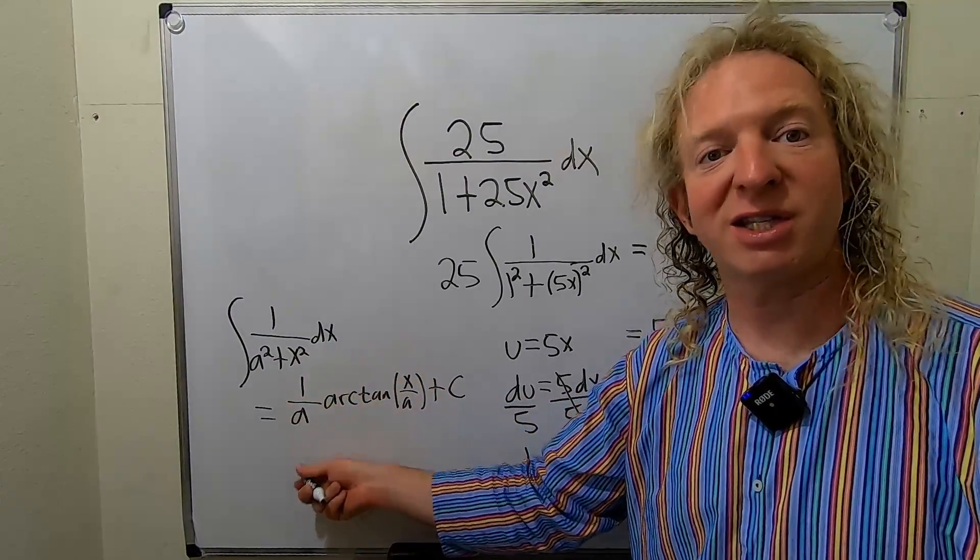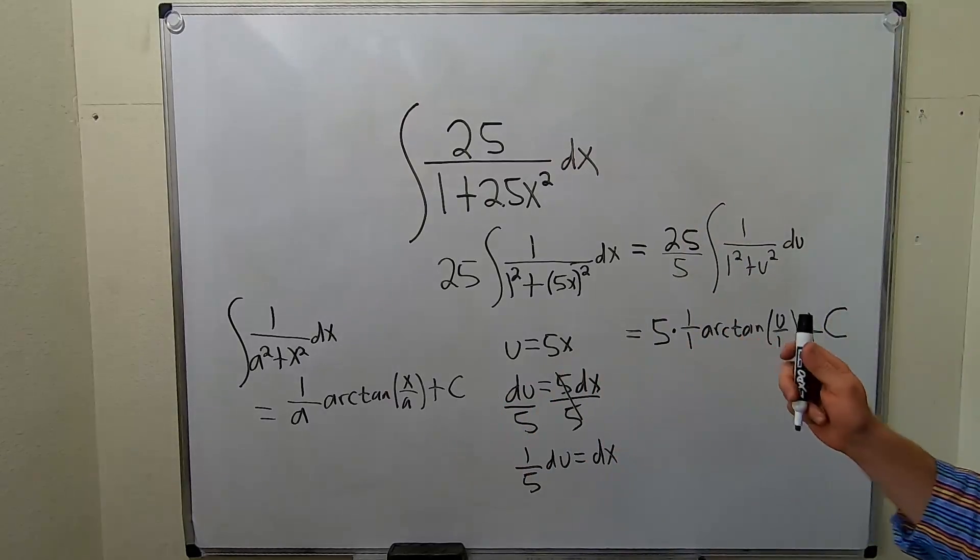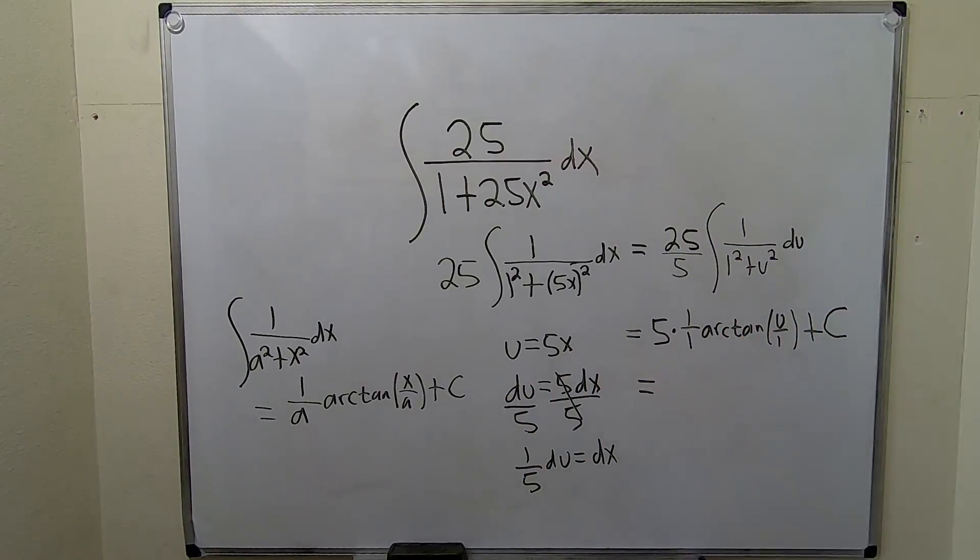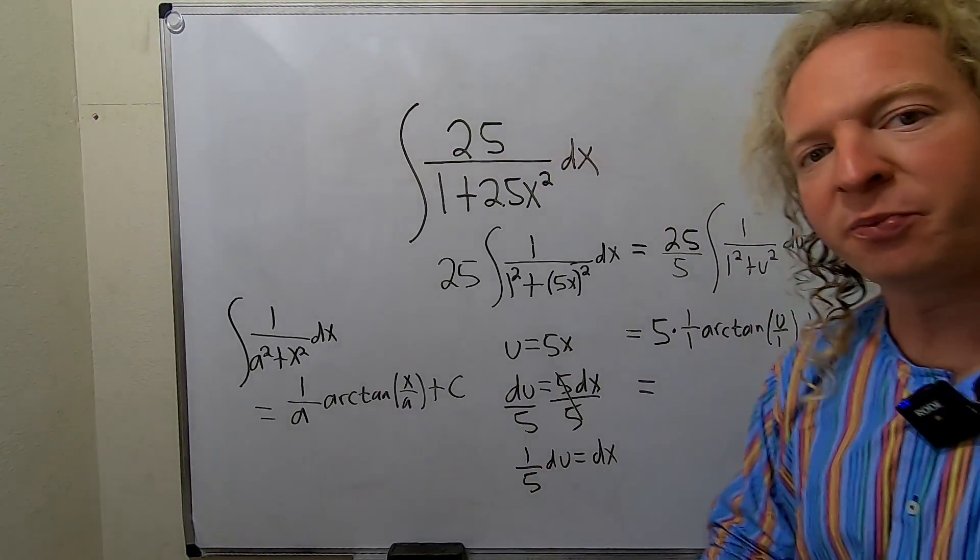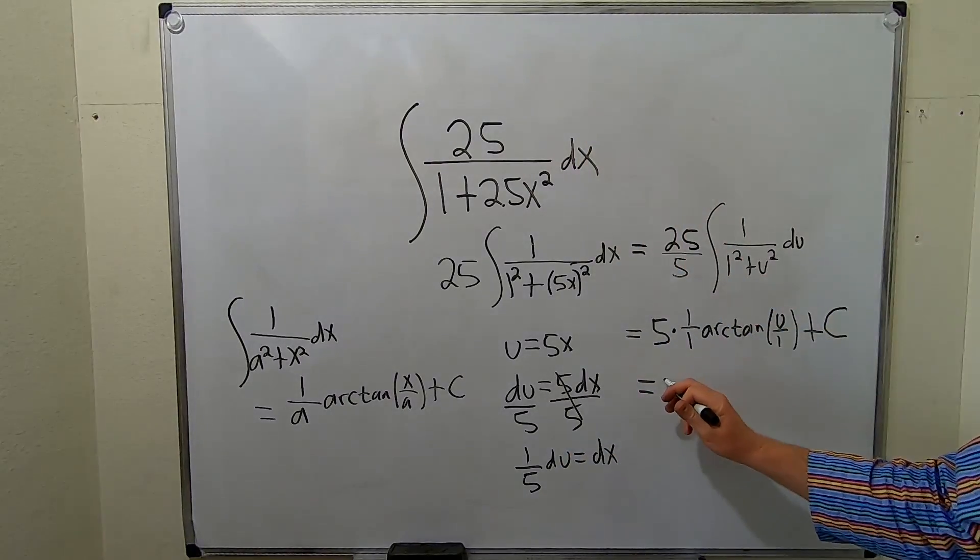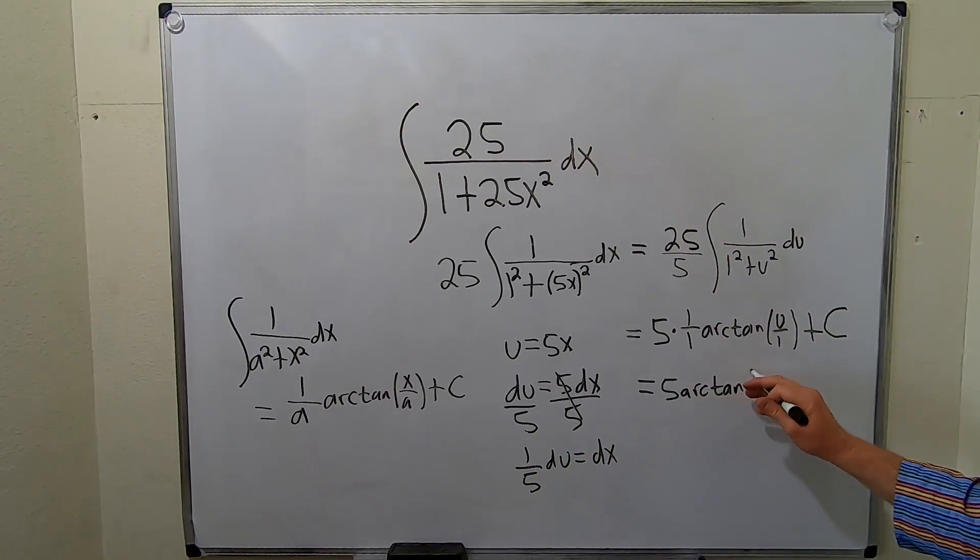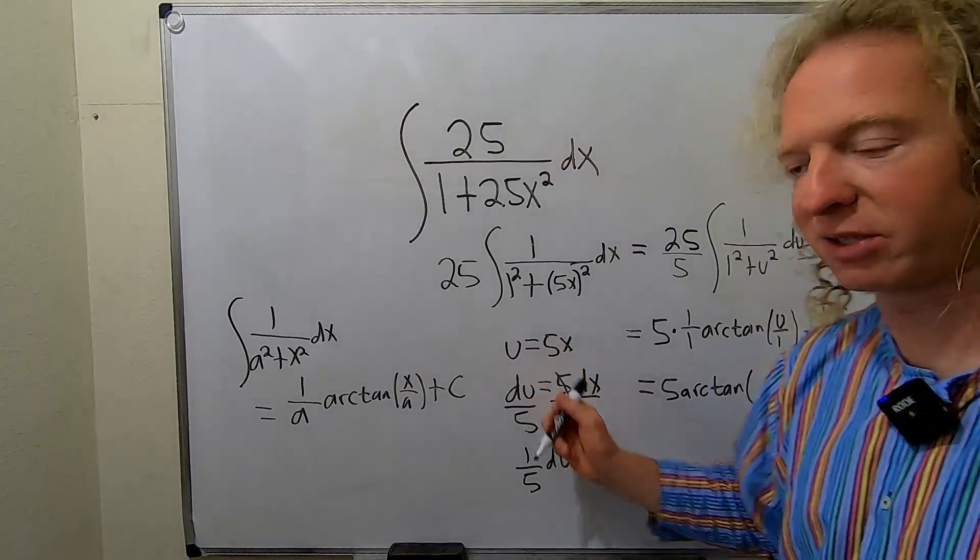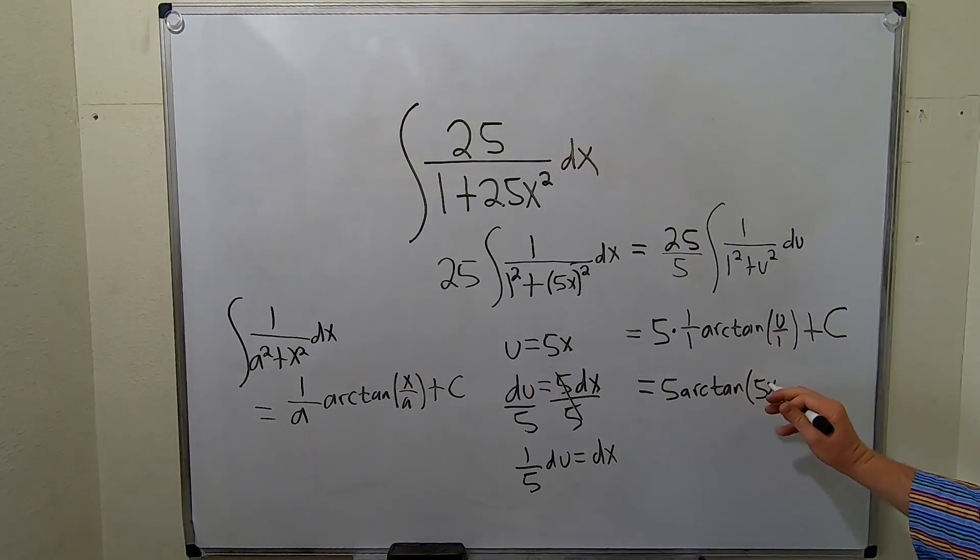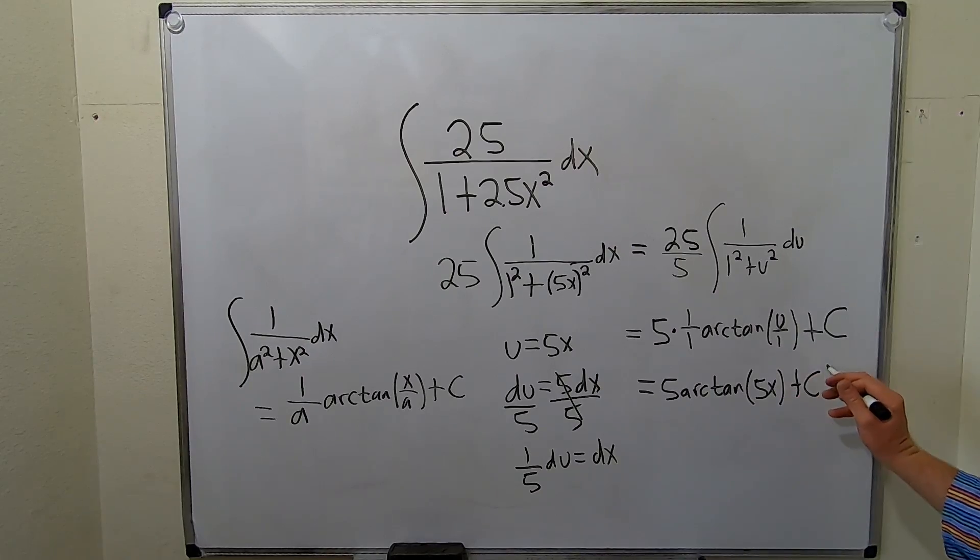So 1 over a arc tan x over a, except instead of x, it's u in this problem. The very last step is to actually replace u with what it actually is. So this will be 5 arc tangent of u, but u was 5x. So this is 5x plus our constant of integration, capital C.